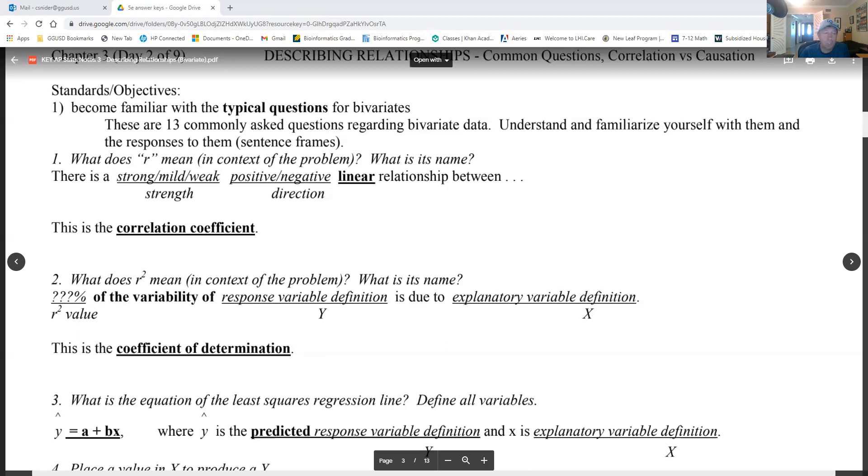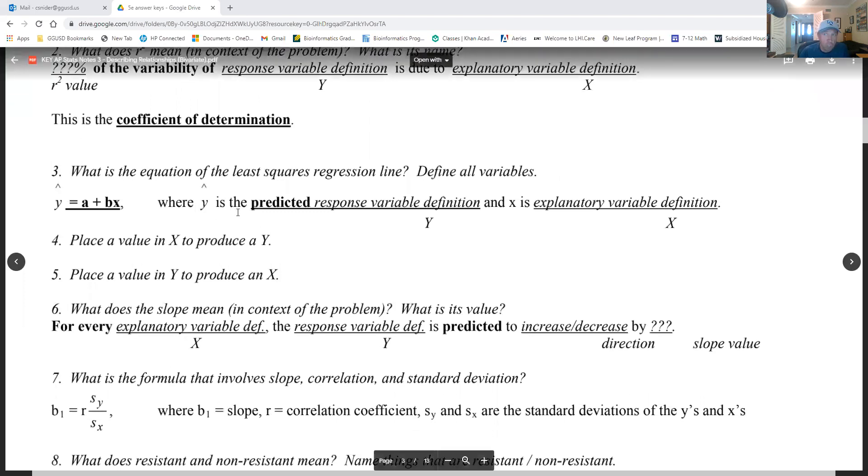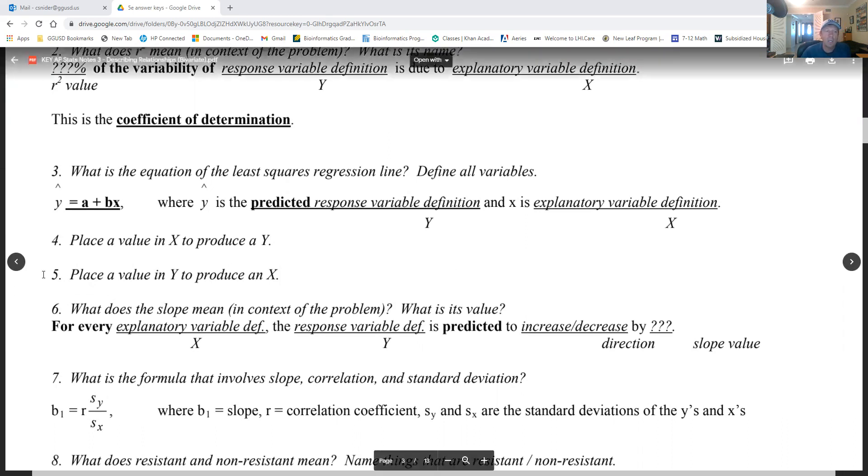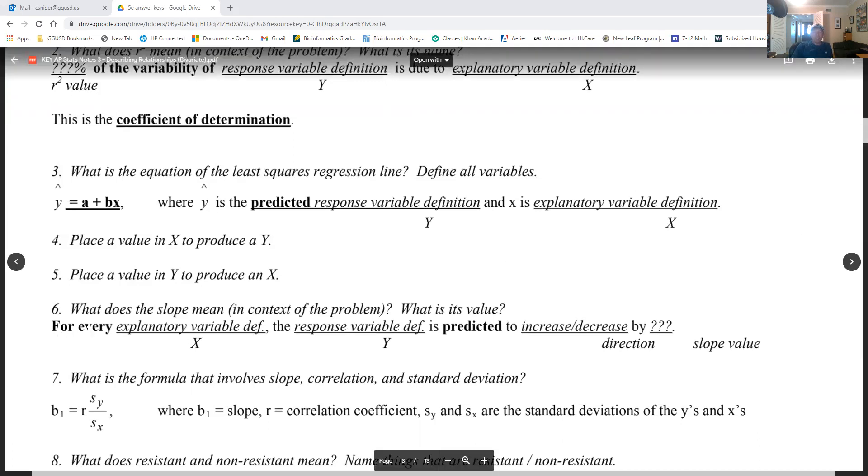It's called the coefficient of determination. They also have pretty common questions where they ask you to just write the equation of the least squares line and define all the variables. That's really common. In that case it's y hat equals a plus bx, and usually in the Minitab printout you'll see it. Four and five are real simple - they're plug-in problems. Sometimes they'll ask you to produce the y or the y hat by knowing what x is, and sometimes it's the reverse, to place the value in y and produce an x.